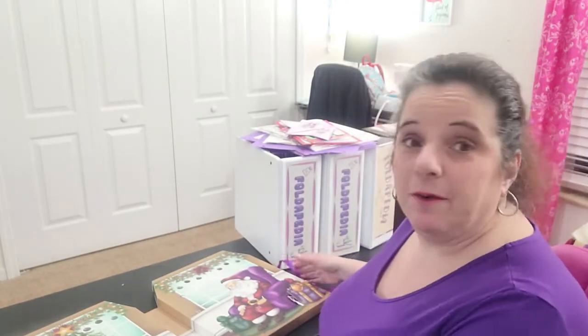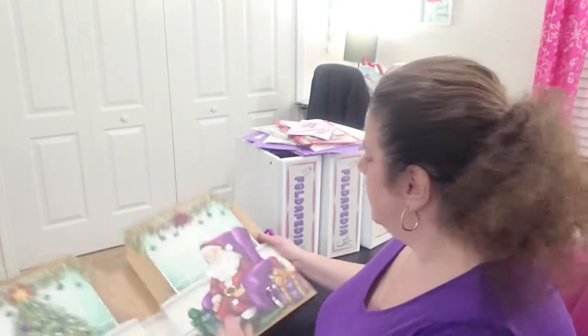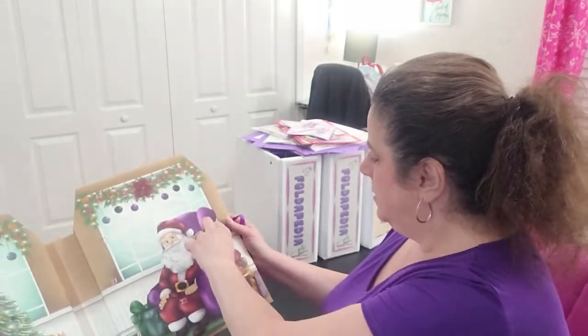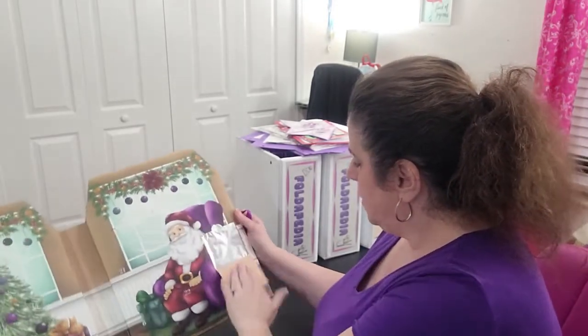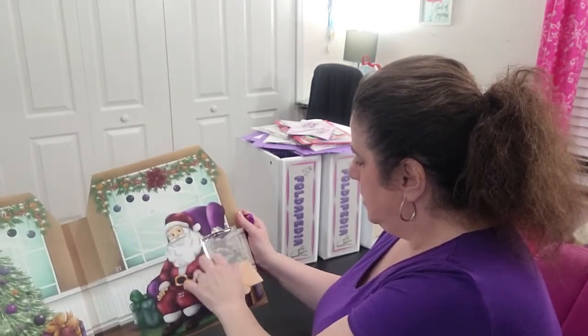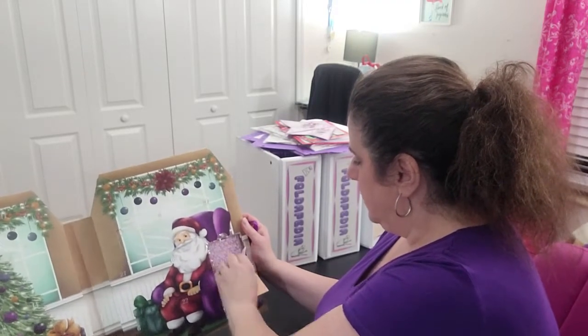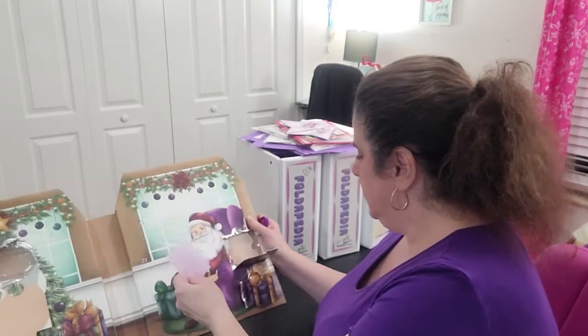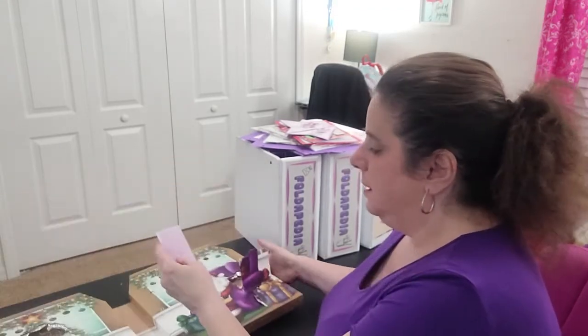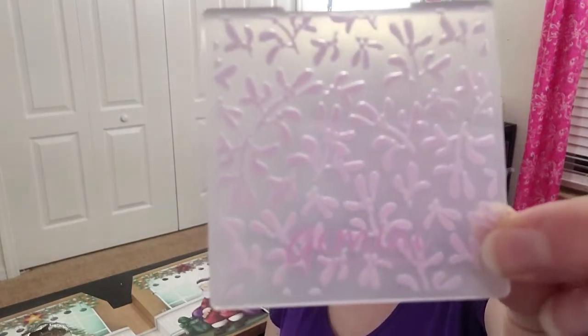Hi everyone, we're back again today for door number five. Let's open it and see what we have. Five is over here, it's a pretty good sized door. It's an embossing folder with leaves, a little baby embossing folder. Let me gather some things and see what we can do with this.